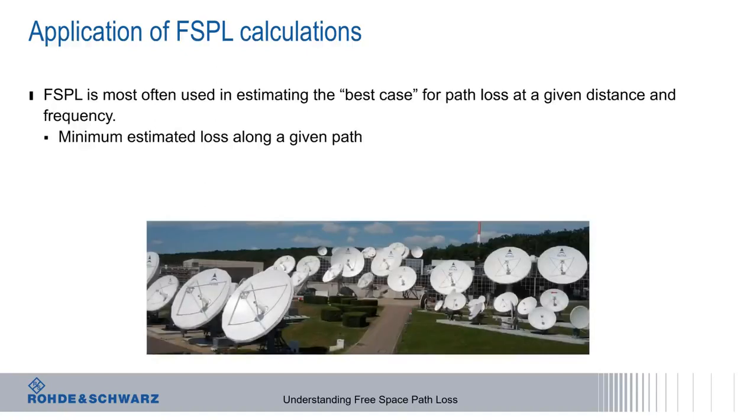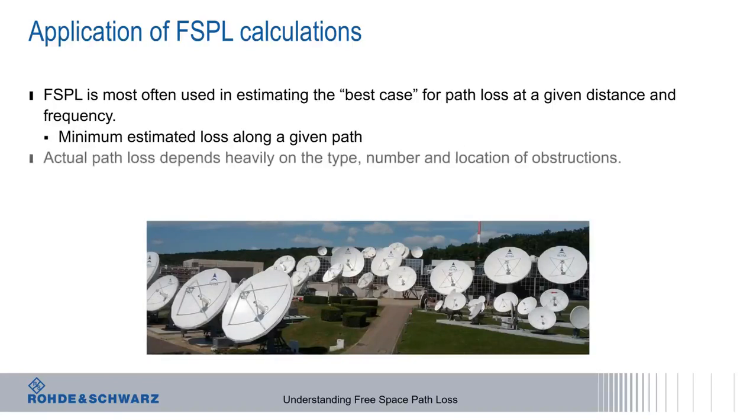A good example of this is satellite signals, where the path between the space vehicle and the ground antenna is about as close to free space as possible. In most other applications, however, the actual path loss between transmitter and receiver will be higher than this best case calculation. This is mostly due to obstructions or objects located along the path.